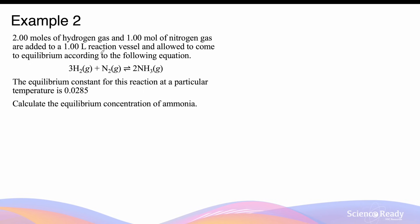Now let's look at an example where the assumption is not valid. The reaction between hydrogen gas and nitrogen gas produces ammonia, NH3. Two moles of hydrogen gas and one mole of nitrogen gas are combined in a 1 litre reaction vessel and allowed to reach equilibrium. The equilibrium constant at this temperature is 0.0285, which is 2.85 × 10⁻², larger than 10⁻⁴, so we should be wary of making the assumption.